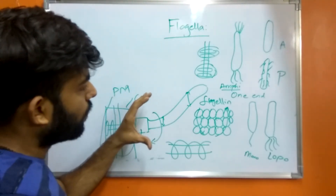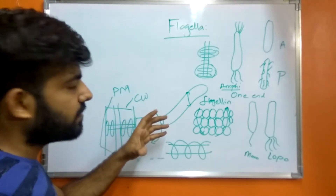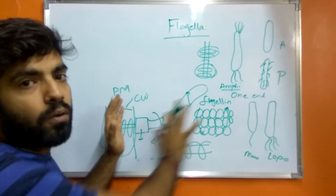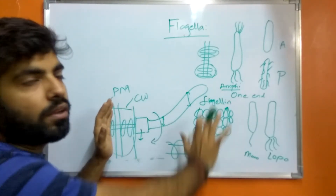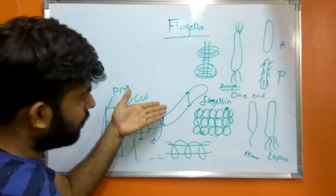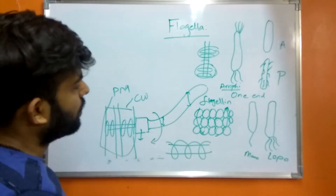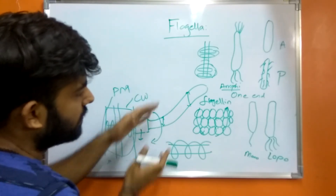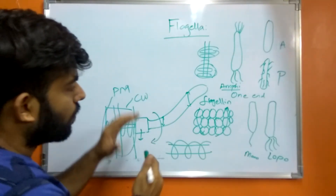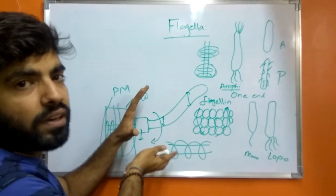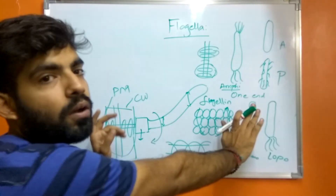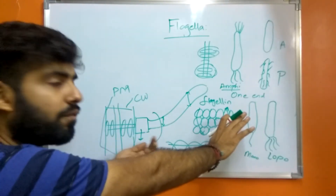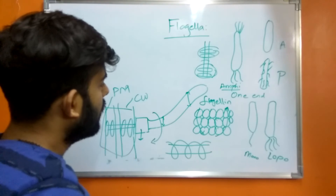When there is rotation in the flagella, the flagella form a bundle, thereby pushing the surrounding liquid and moving the organism in the forward direction. If there are 2 to 3 flagella, the rotation leads to bundling of the flagella, which pushes the surrounding liquid and propels the bacterium forward.